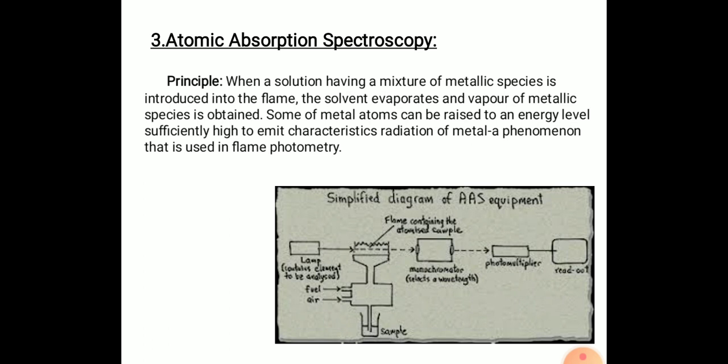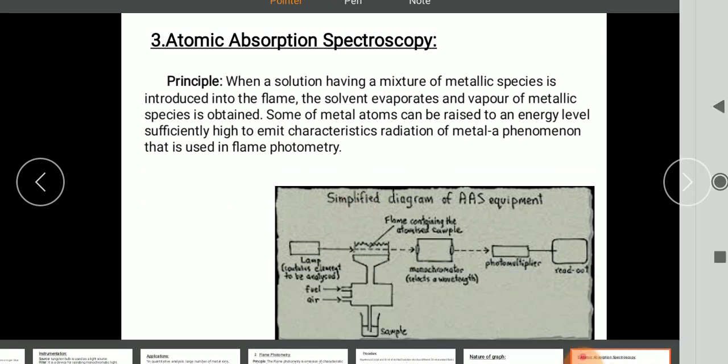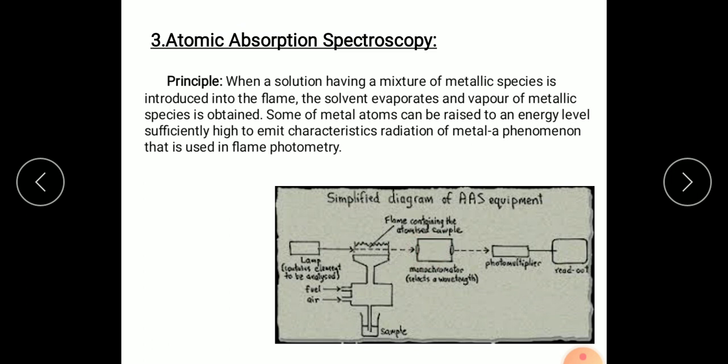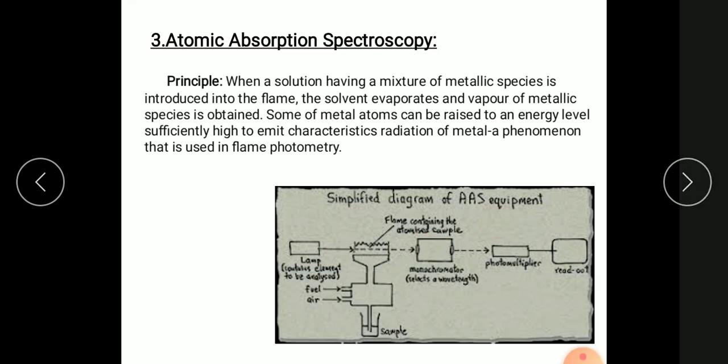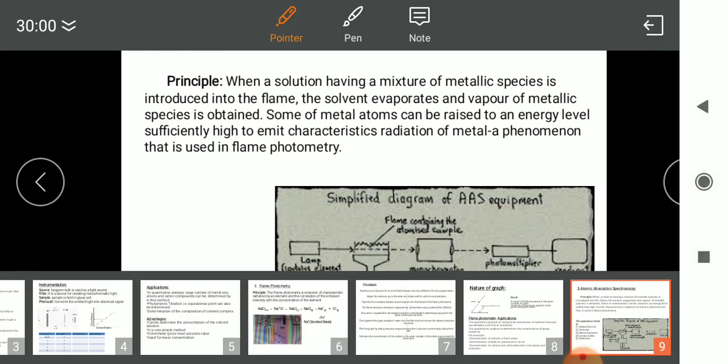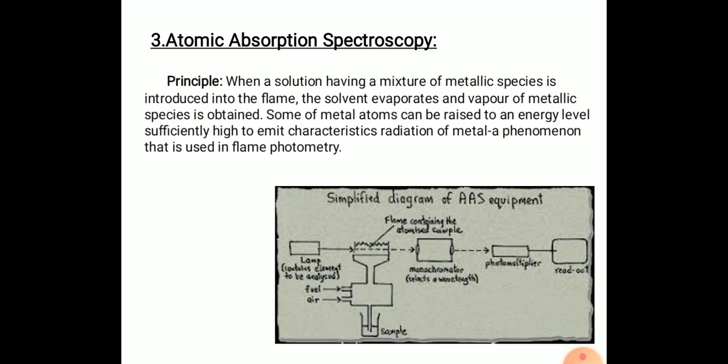Here this is the simplified diagram of AAS equipment. Here you can observe a lamp, a sample is kept here, and this is the flame containing the sample, this is monochromator, and this is photomultiplier and detector where you can read the readings. So this is the diagram of AAS equipment.